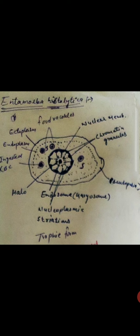In the endoplasm, there are ingested RBCs and food vacuoles present. Within these, RBCs, WBCs, epithelial cells, and bacteria are present. Anteriorly, a broad and blunt pseudopodium is present. This helps in movement. Nutrition is by phagocytosis, taking in solid food particles.